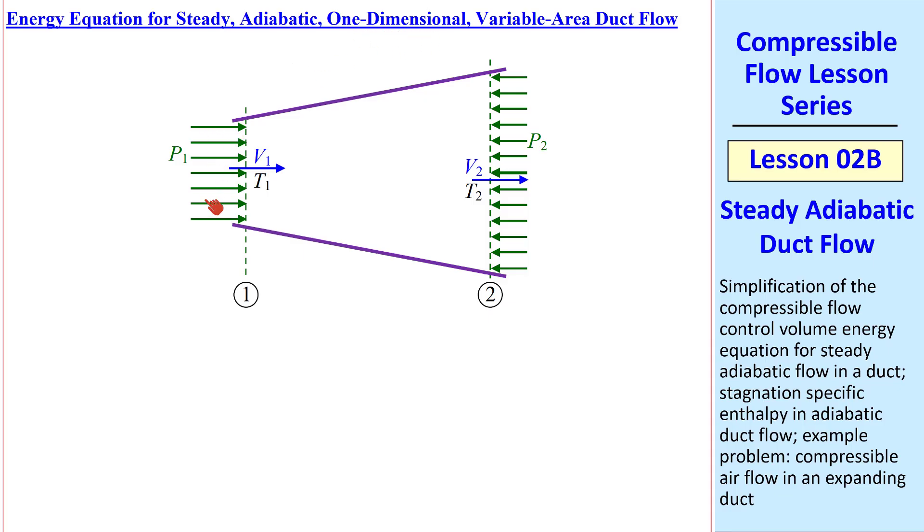So variables such as pressure are uniform across an inlet or an outlet, for example. But the duct can be variable area.